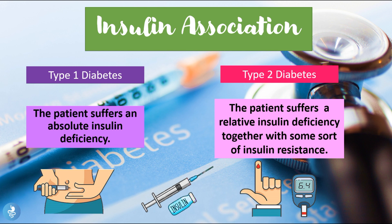In type 1 diabetes the patient suffers an absolute insulin deficiency because their pancreas cannot produce any insulin at all. In type 2 diabetes the patient suffers a relative insulin deficiency together with some sort of insulin resistance, where the body either doesn't produce enough insulin or the cells in the body resist it and can't use it effectively.